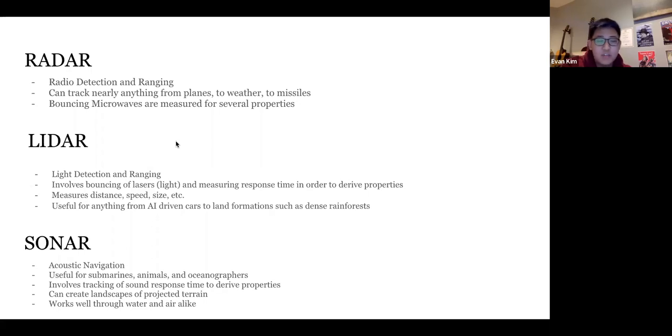LIDAR can be really useful for anything from AI driven cars to measuring land formations such as dense rainforests. A plane or aircraft can be flown over a rainforest and measure the treetops and foliage with LIDAR in order to get an accurate image of it. That image can be used for anything from navigation, moving through the rainforest accurately to gauging the health of the rainforest to anything that might be living in it. LIDAR just like radar can measure distance, speed, size, and from how the beam of light is affected, it can measure texture and material.